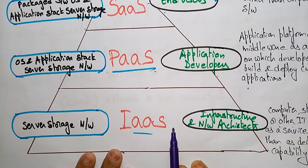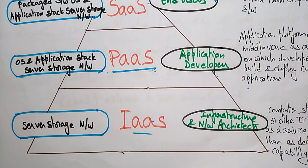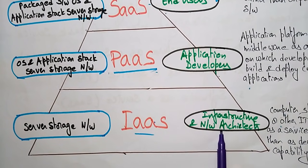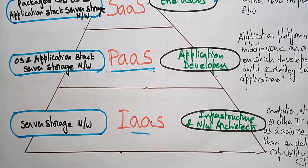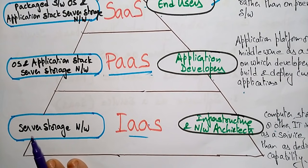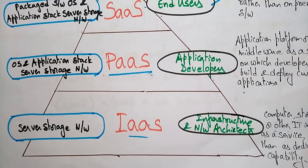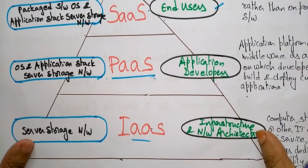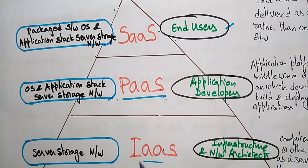Infrastructure as a Service consists completely of hardware — server, storage, networks, and network architecture infrastructures. It provides computer storage and other IT infrastructure as a service rather than as a dedicated capability. Rather than maintaining their own organization's infrastructure, customers use the infrastructure services provided by the cloud.